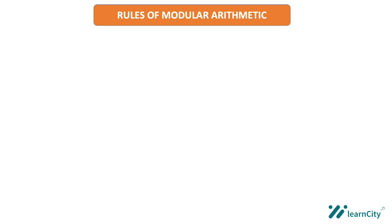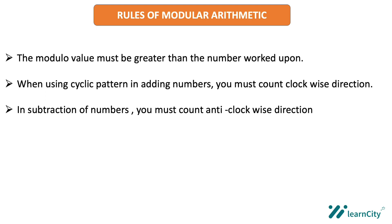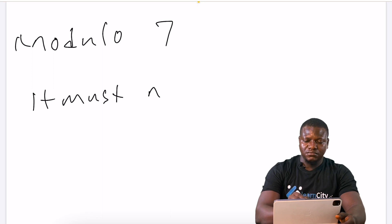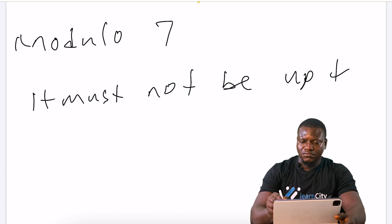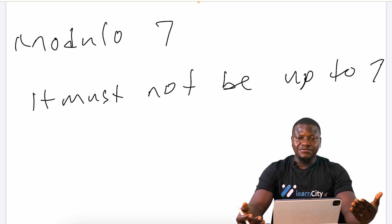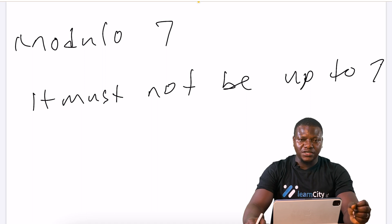We'll be taking ourselves through the rules of modular arithmetic. The number one rule is this: the modular value must not be greater than the number worked on. Let's assume my modular value is seven. My final answer must not be up to seven. That means I have to simplify anything I get as my answer to a value less than seven because I'm working in modular seven.